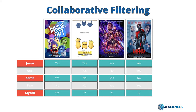Let's see what other movies Jason and Sarah liked that we didn't see. For Minions they gave one vote, for Avengers they gave two votes, and for Ant-Man they gave one vote. So according to collaborative filtering, our recommender system gives us the recommendation to watch Avengers next.